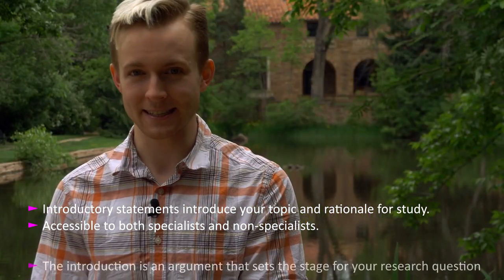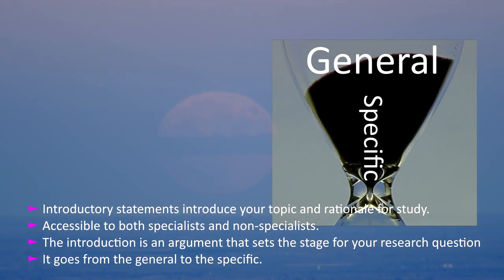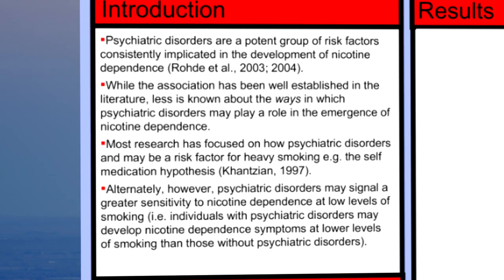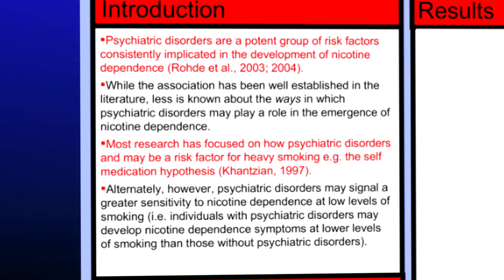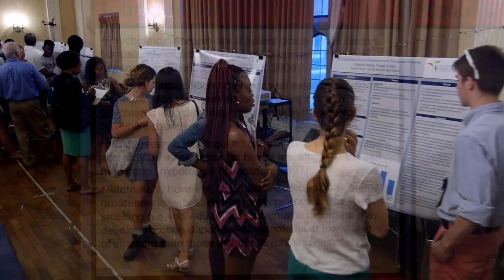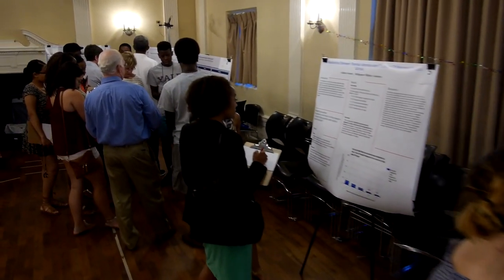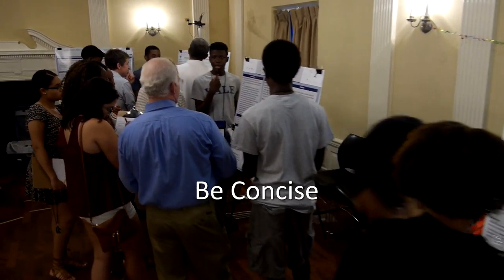The introduction is an argument that sets the stage for your research question, and modeling the top of an hourglass, it goes from the general to the specific. The introduction includes what is known about a topic — highlighted here in red — what is not known, highlighted in green, and what our study may contribute, highlighted in purple. All of this background sets up our research question. We include nothing extra. We want a reader to be interested in knowing more, so we try to be very concise. Each word counts.